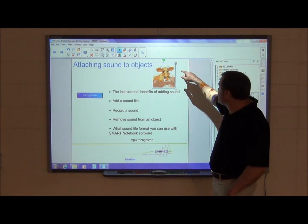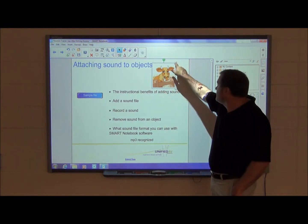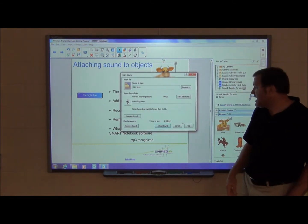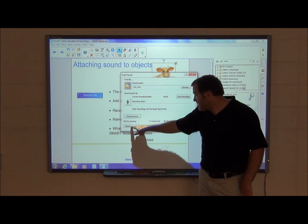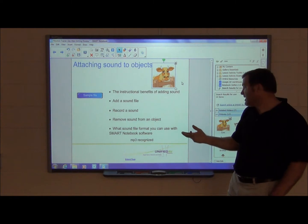Now if I want to take a sound off, I simply select my object, do my drop down. Here's my sound. I have an option right here that says remove sound. So I can press that. Now when I press my object, the sound is no longer there.